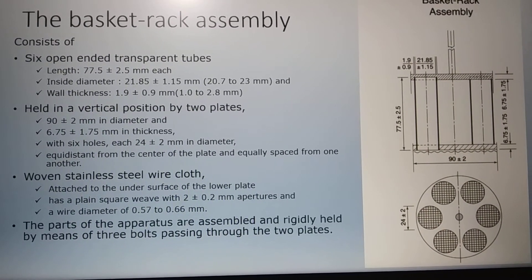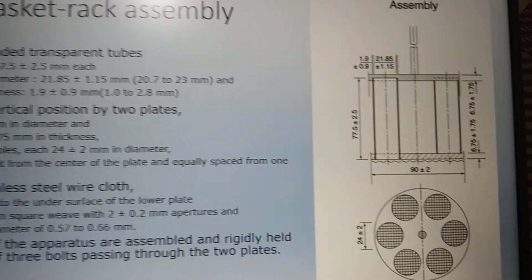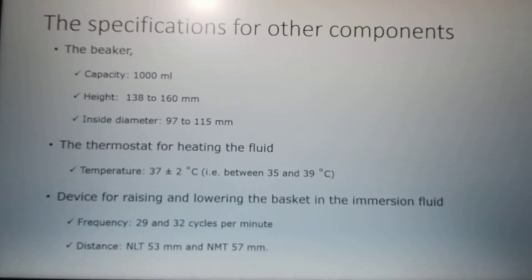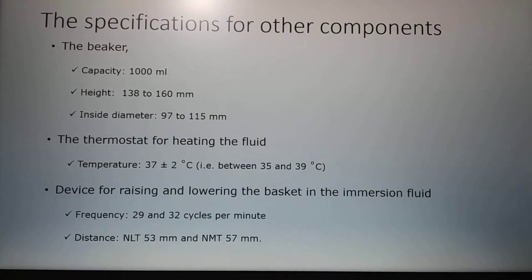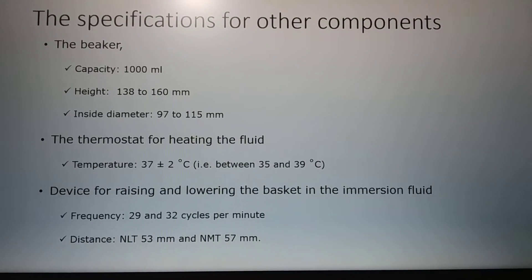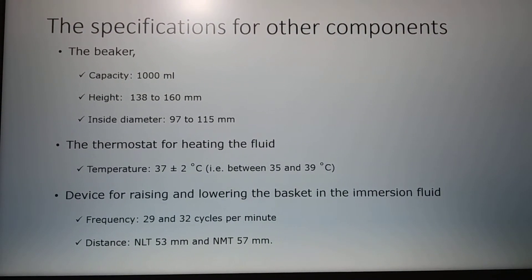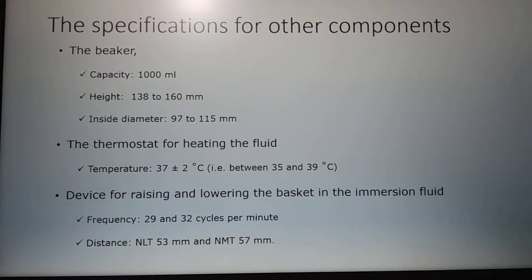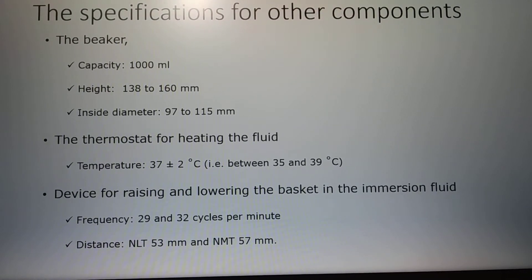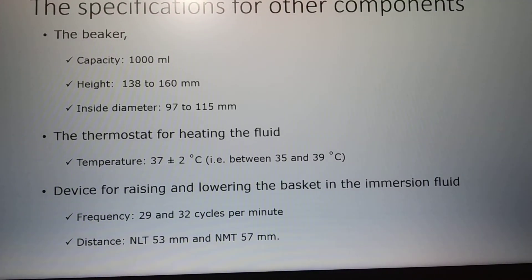You can see all dimensions given in the picture. Specifications for the remaining components are also given in the USP. The beaker has a one-liter capacity; the height of the beaker should be 138 to 160 mm, and the inside diameter is 97 to 150 mm. There is a thermostat which should be capable of maintaining the temperature of the fluid inside the beaker at 37 plus or minus 2 degrees Celsius.